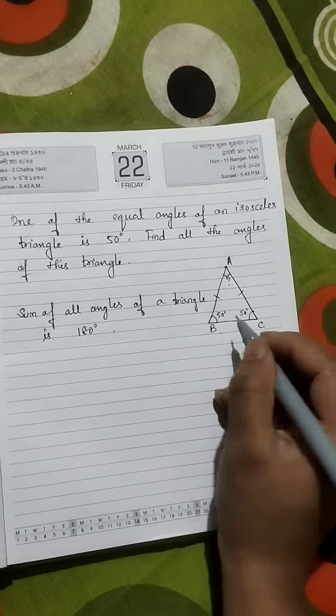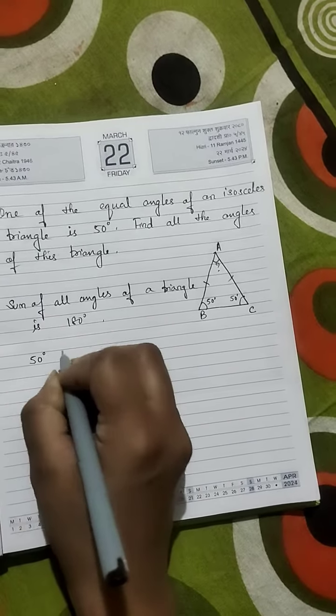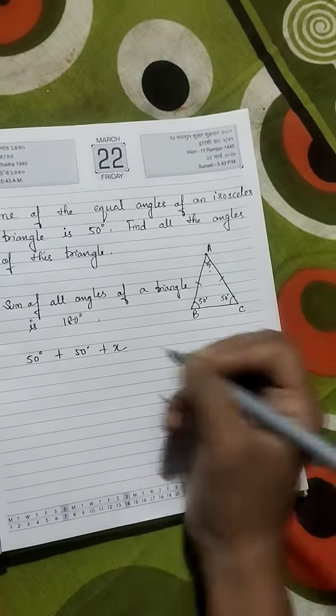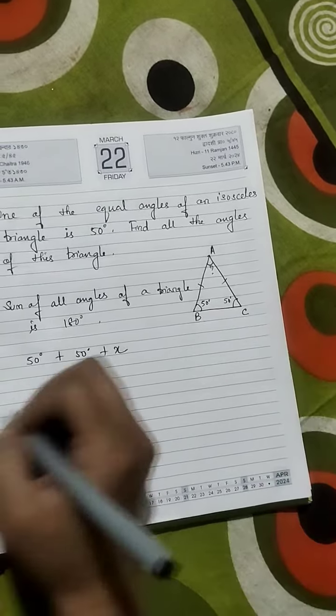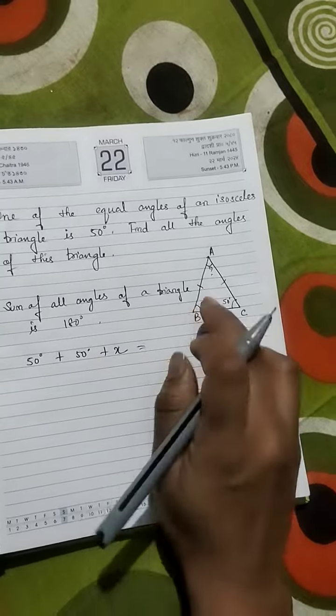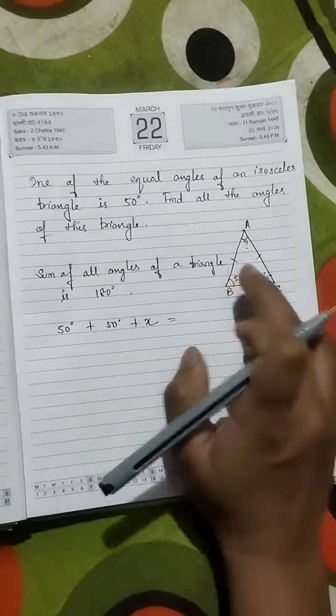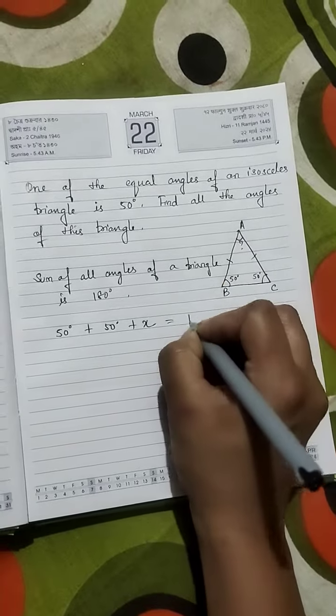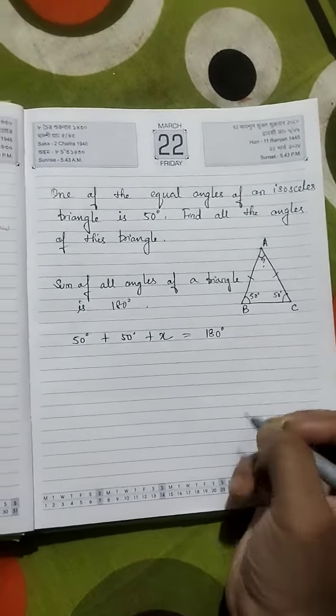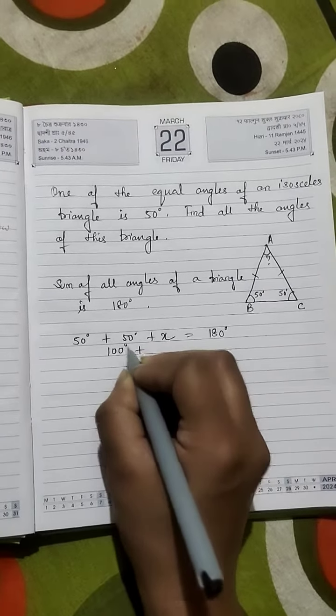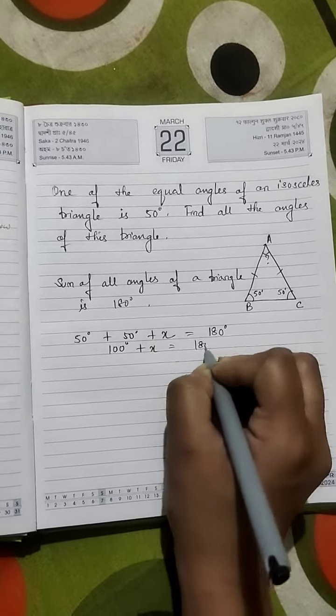Now we have these two angles given, so 50 plus 50, and the one that's not given we'll write as x. The sum of three angles is 180, so 50 plus 50 is 100, plus x equals 180 degrees.